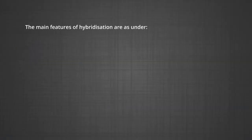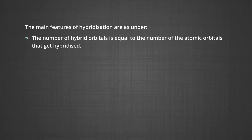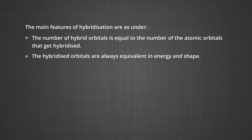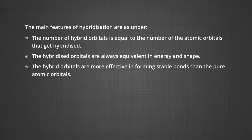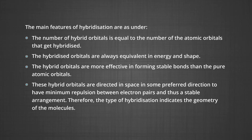The main features of hybridization are as follows. The number of hybrid orbitals is equal to the number of atomic orbitals that get hybridized. The hybridized orbitals are always equivalent in energy and shape. The hybrid orbitals are more effective in forming stable bonds than the pure atomic orbitals. These hybrid orbitals are directed in space in preferred directions to have minimum repulsion between electron pairs and thus a stable arrangement. Therefore, the type of hybridization indicates the geometry of the molecule.